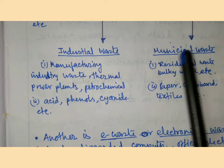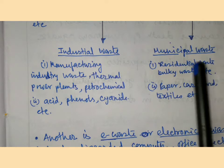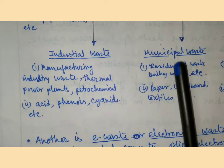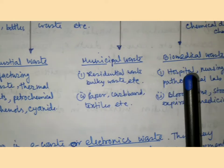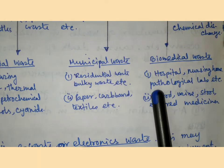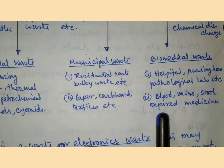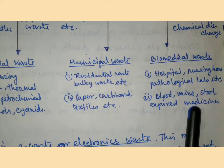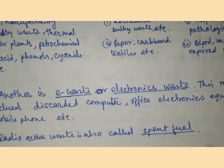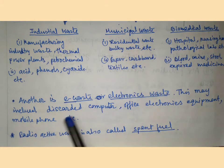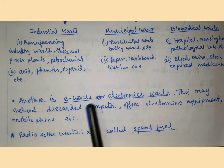Municipal waste includes residential waste, bulky waste, etc. Examples are newspaper, cardboard, and textile. Biomedical waste comes from hospitals, nursing homes, and pathological labs — blood, urine, stool, and expired medicine are examples of biomedical waste. Another important category is e-waste, which includes discarded computers, office electronics equipment, and mobile phones.